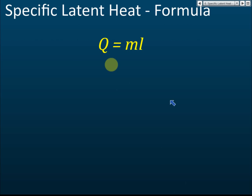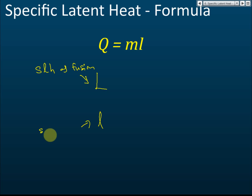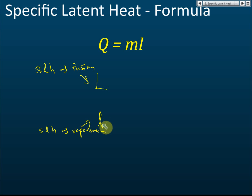From the definition, we know that specific latent heat is denoted by the symbol L. There are actually two symbols: capital L is for specific latent heat of fusion, and small letter l is for specific latent heat of vaporization.